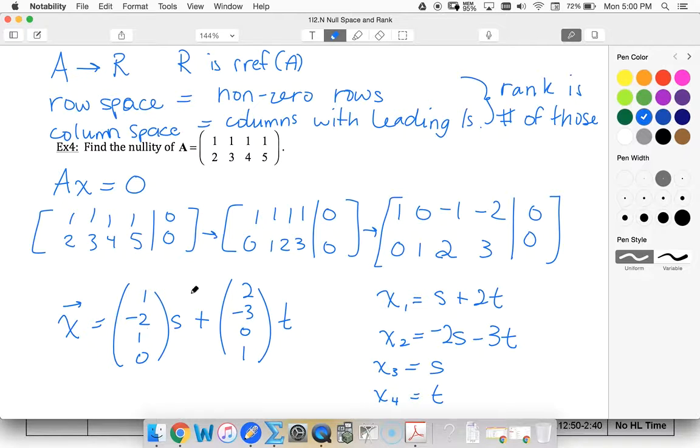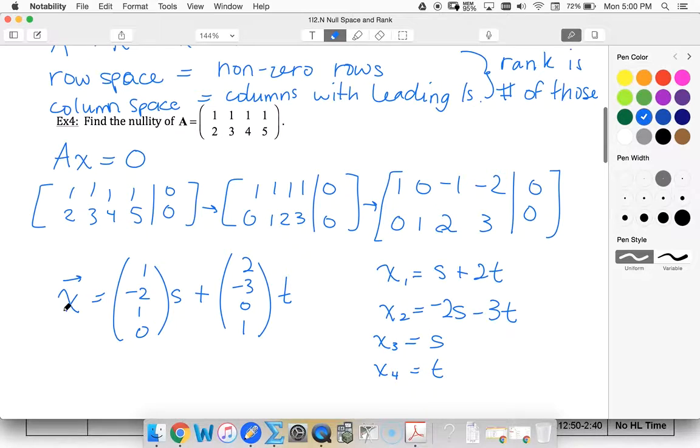Again, we had two free variables. So that means my nullity of A is going to be 2. Notice these are linearly independent, and these are the vectors that also make the basis of my null space.